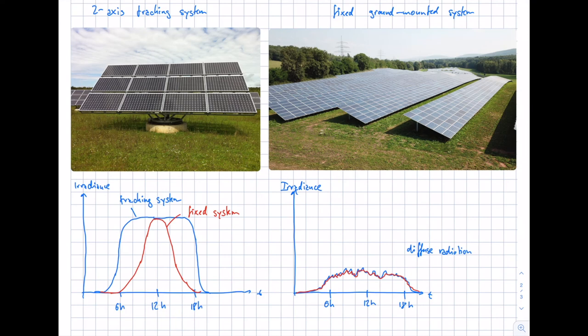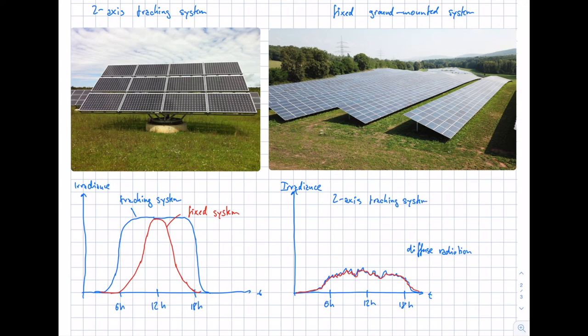Comparing the annual energy generation of the two systems: for a location in central Europe, the two-axis tracking system generates 30 to 40 percent more electricity than the fixed ground-mounted system in one year. This advantage comes from good weather conditions and clear sky days, where the tracking system collects a much larger amount of energy compared to the fixed system.